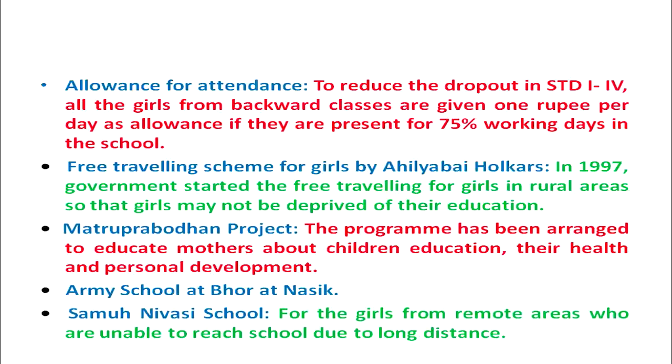Another scheme for girls is Smuhniwasi school. These Smuhniwasi schools are for the girls from remote areas who are unable to reach school due to long distances between their home and the school. These Smuhniwasi schools have been established in the state of Maharashtra so that the girl child could not be deprived of elementary education. These were the schemes for the girl child in the state of Maharashtra for achieving the target of universal elementary education.